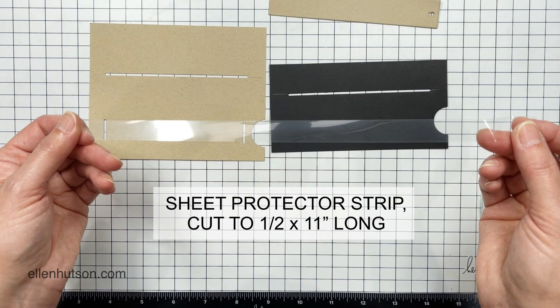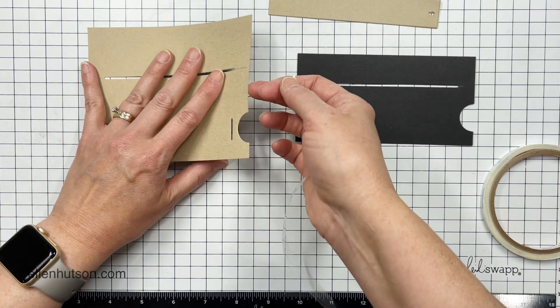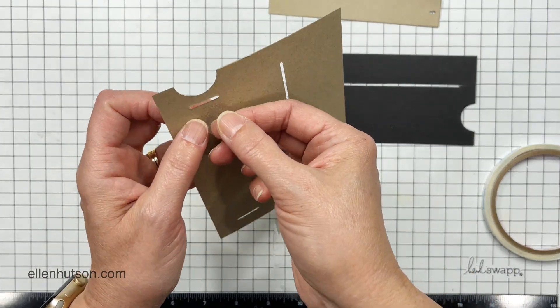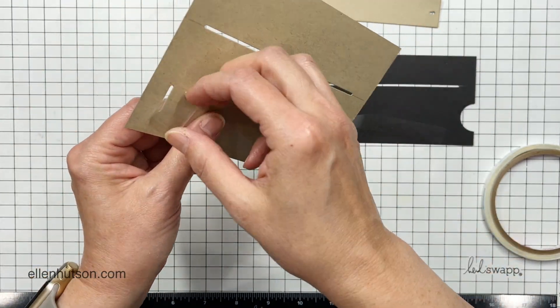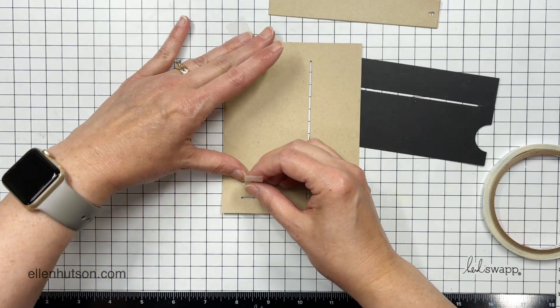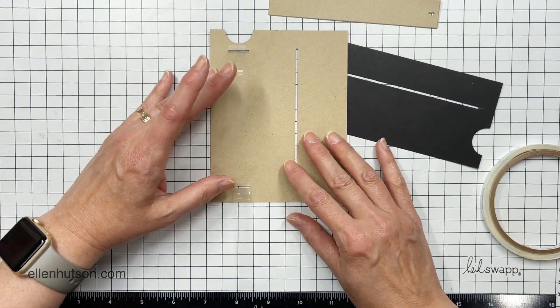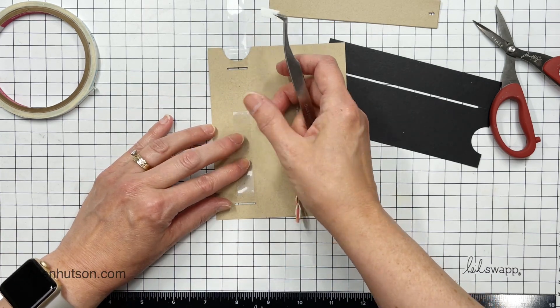I also need something to serve as a belt, and so I'm using a sheet protector that I cut to a half inch by 11 inches in length. I have a ton of those laying around, but you could use Ziploc bags, grocery shopping plastic bags, dog poo bags, or even a piece of ribbon. Anything that will create this belt and slide freely is what you need.